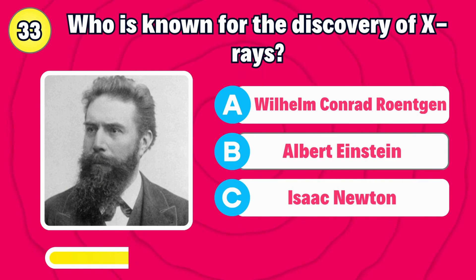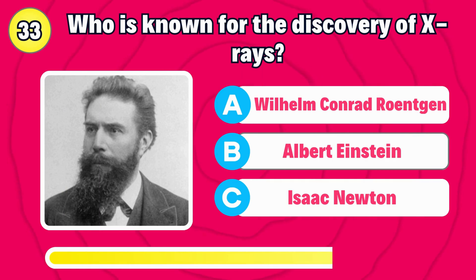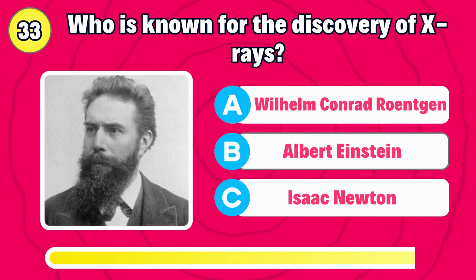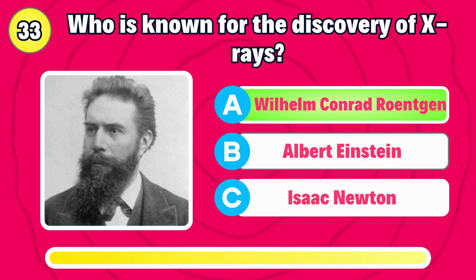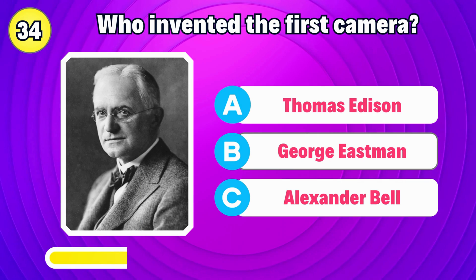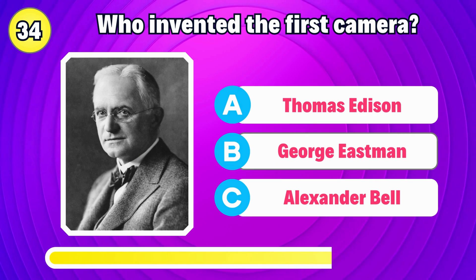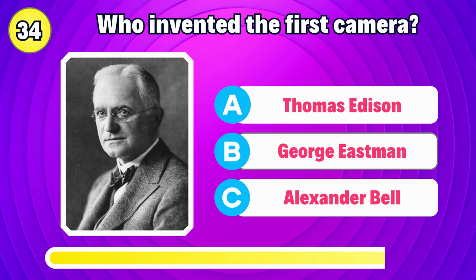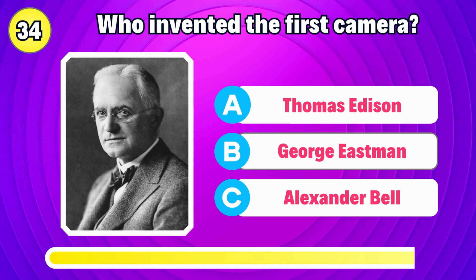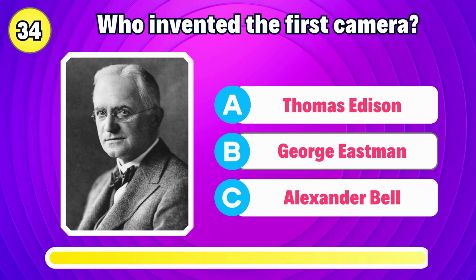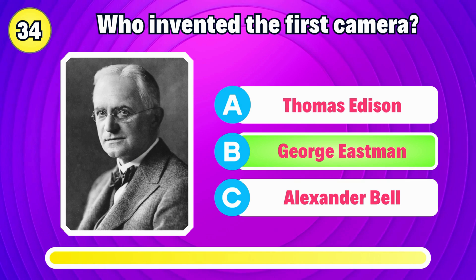Who is known for the discovery of X-rays? Correct, it's Wilhelm Conrad Röntgen. Who invented the first camera? Right, it's George Eastman.